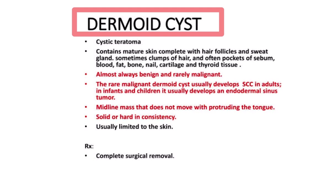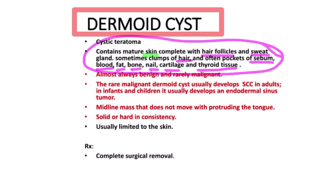The dermoid cyst is also known as a cystic teratoma. It contains skin, hair follicles, sweat glands, sebum, blood, fat, bone, nail, cartilage, and even thyroid tissue — meaning it can contain any type of tissue. For this reason, there is a heterogeneous appearance on imaging.